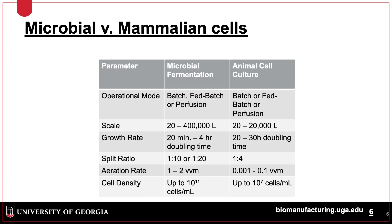There are many differences between microbial and mammalian growth. The scale of mammalian culture is generally less, with most runs now being performed in a max of 2,000 liters in single-use bioreactors. The biggest difference is the doubling time, which can be 20 times slower or more for mammalian cells. The split ratio, or how dilute the cells are when scaling, is higher for microbial cells, since they grow faster. Aeration rates are much lower for mammalian cells, since they don't need as much oxygen.